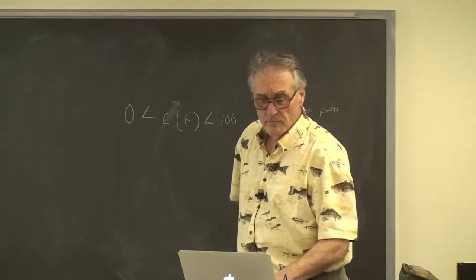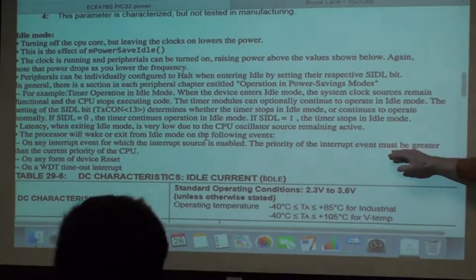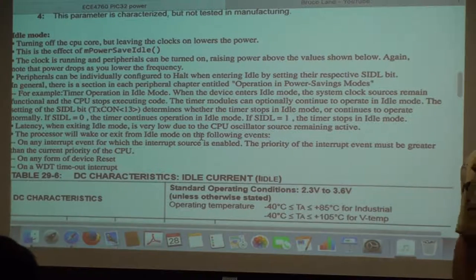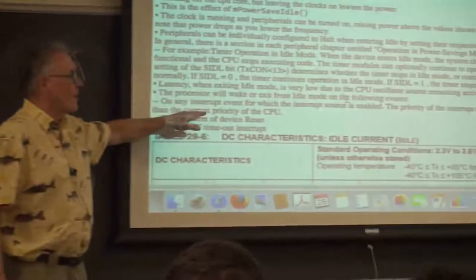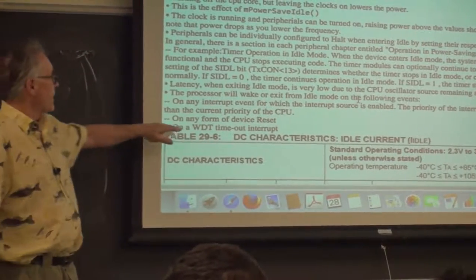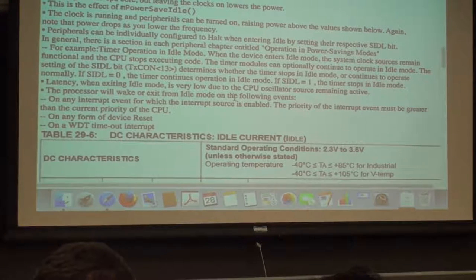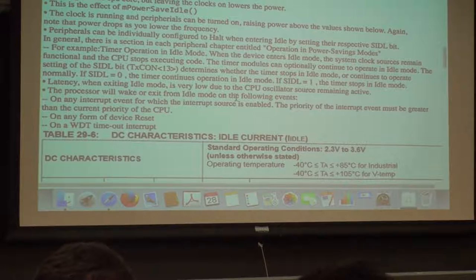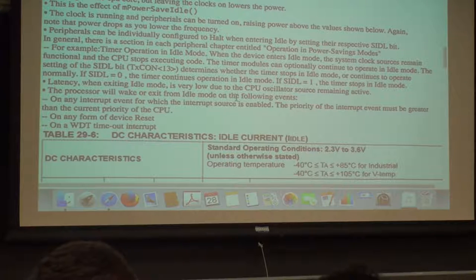How do you get out of idle mode? You take an interrupt which is enabled and whose priority is greater than the priority of the CPU — the CPU itself has a priority, so you can decide whether a given interrupt is going to wake up the CPU or not. Any form of system reset also takes it out of power-save mode, and a watchdog timer timeout can take it out of idle mode. The watchdog timer is a timer which is very hard to start or stop — if it times out, it forces a reset on the CPU. This is so that if you have code gone wild, you can bring the CPU back to a known state in a way that is hard to disable.